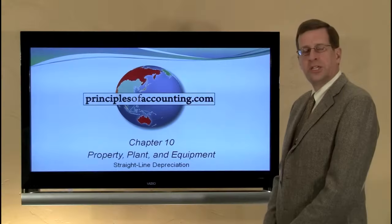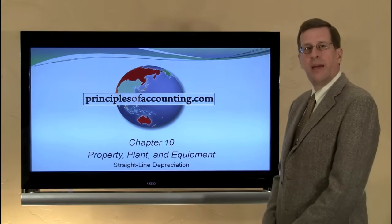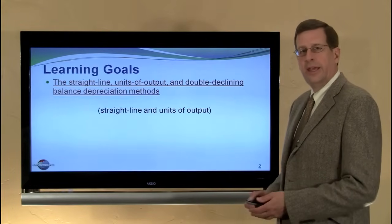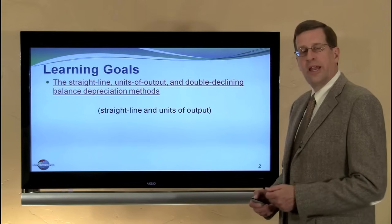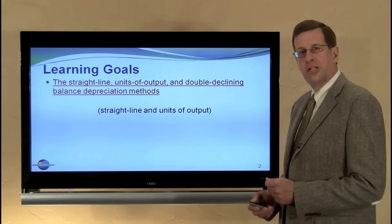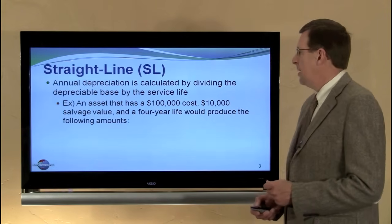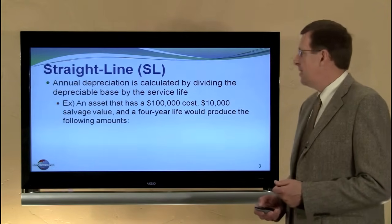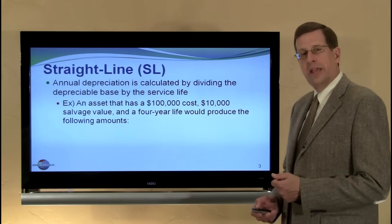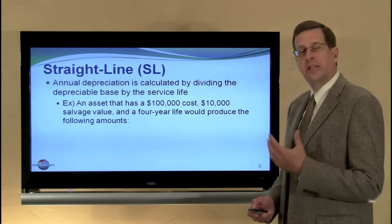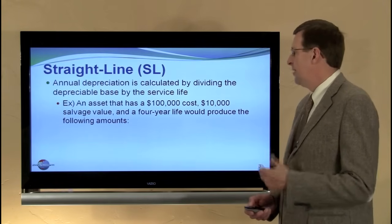I'm Larry Walther, this is PrinciplesOfAccounting.com Chapter 10, and in this module we will look at the straight line method and units of output depreciation method. Under the straight line method, the annual depreciation is calculated by dividing the depreciable base by the service life.